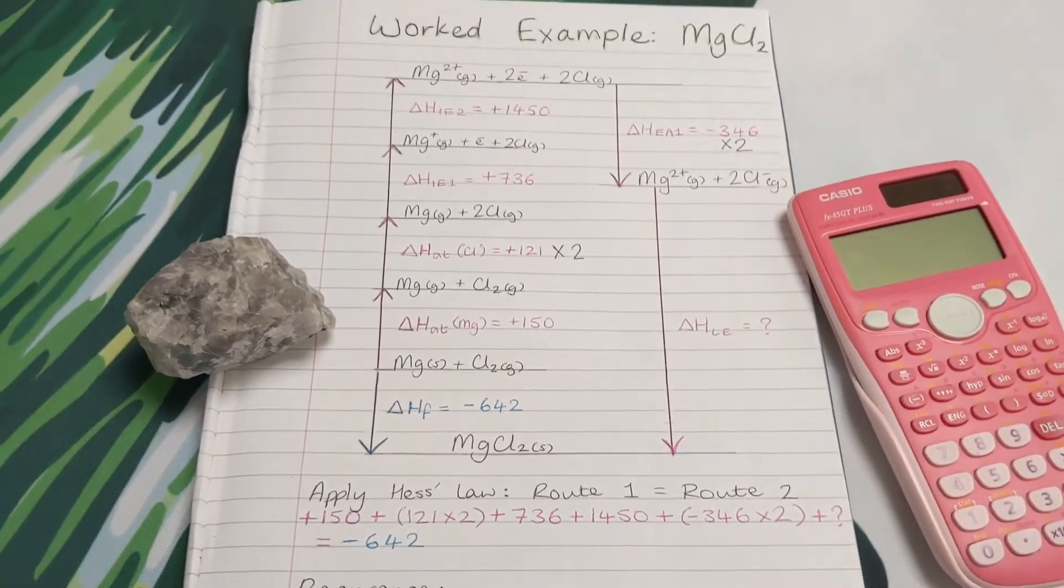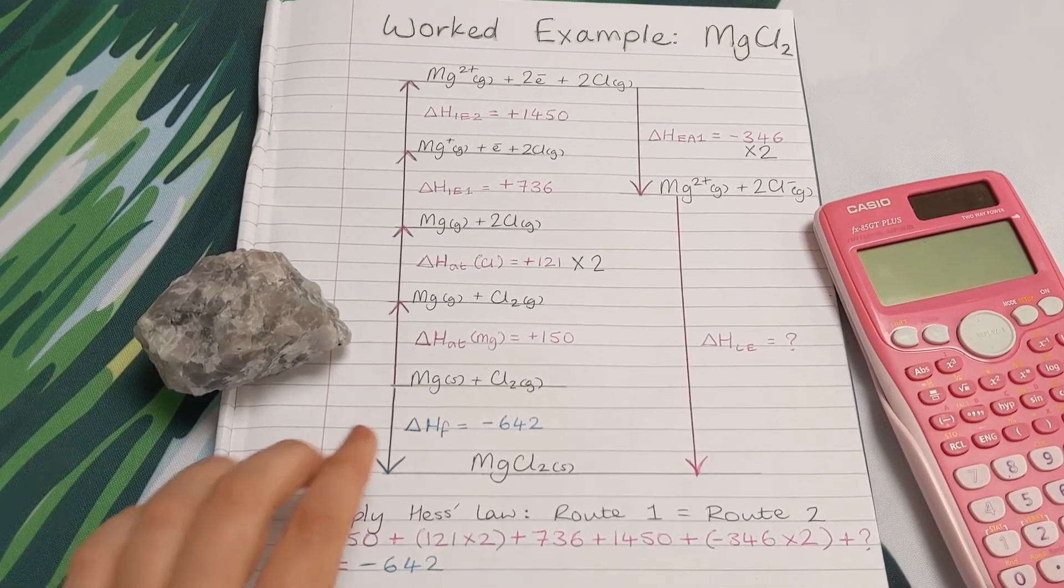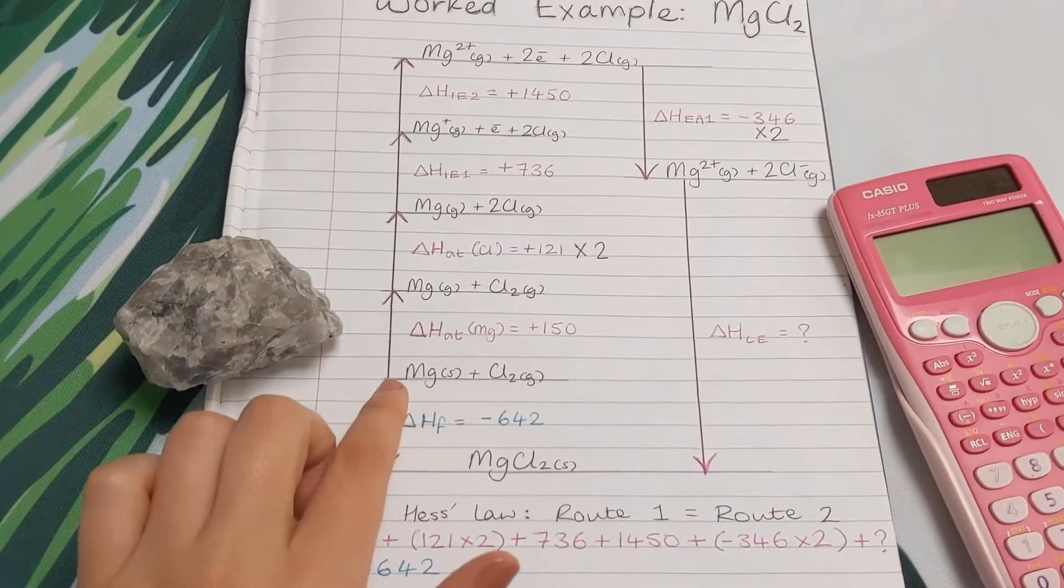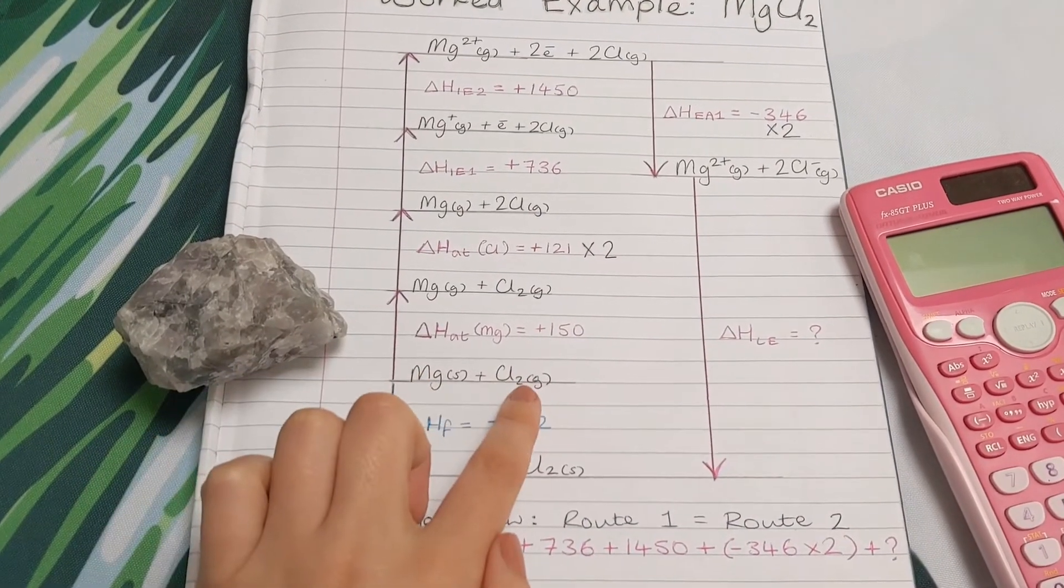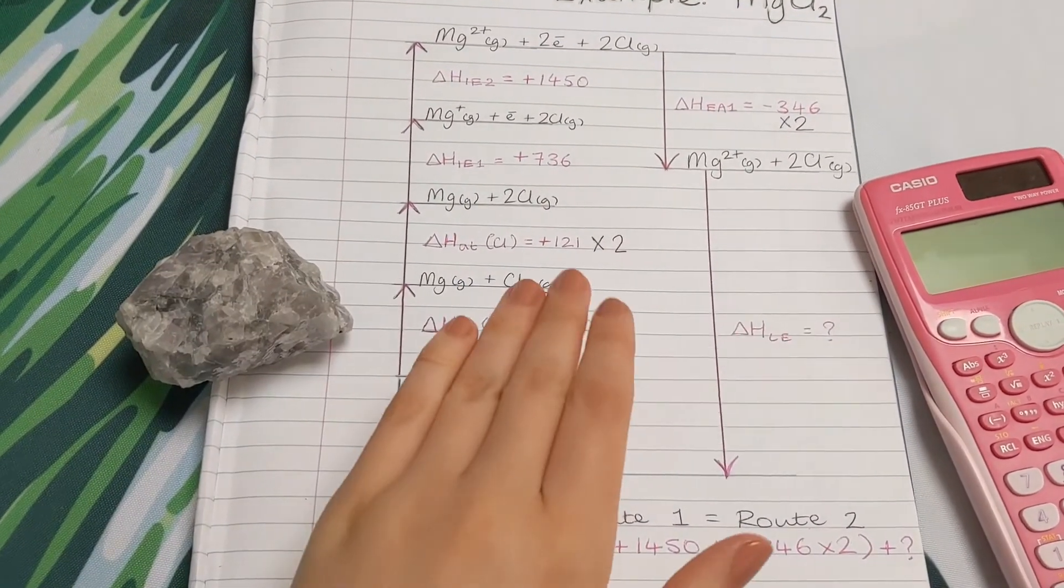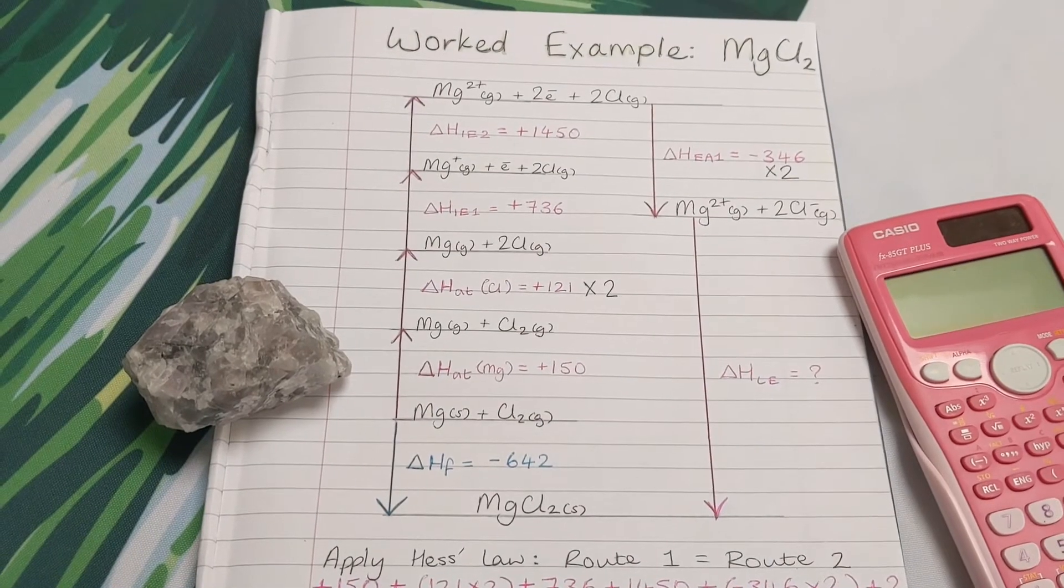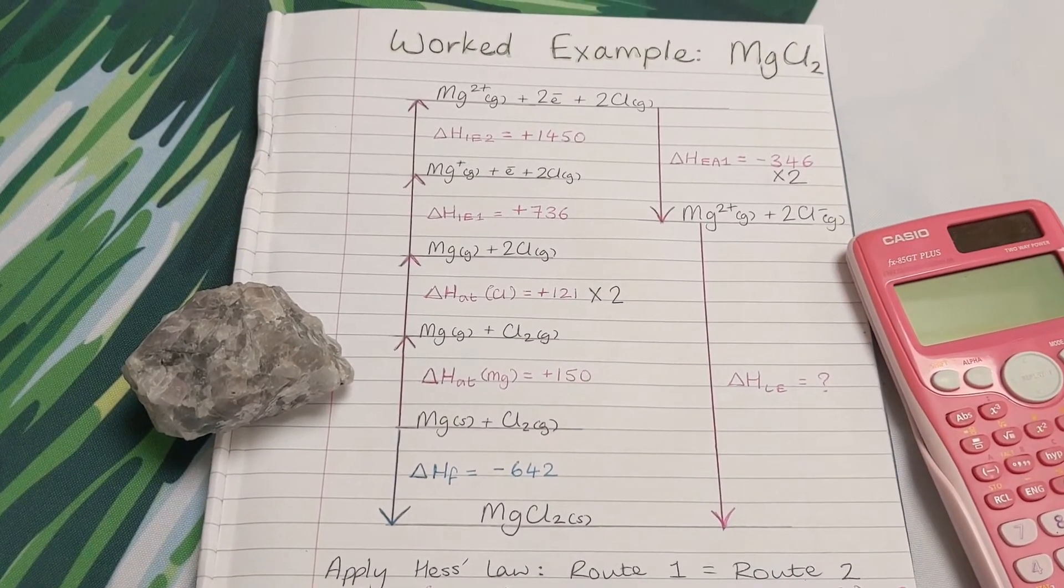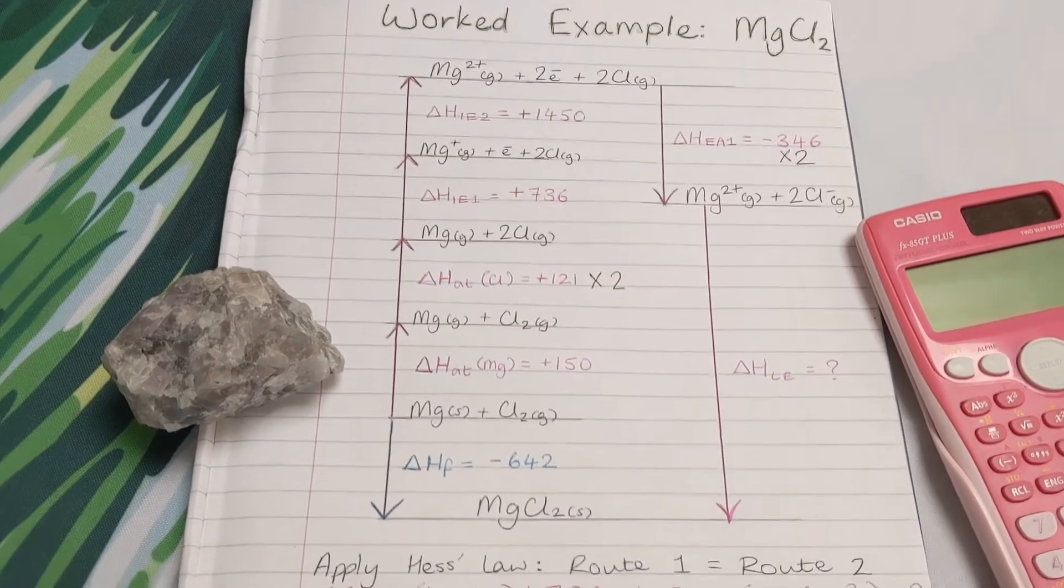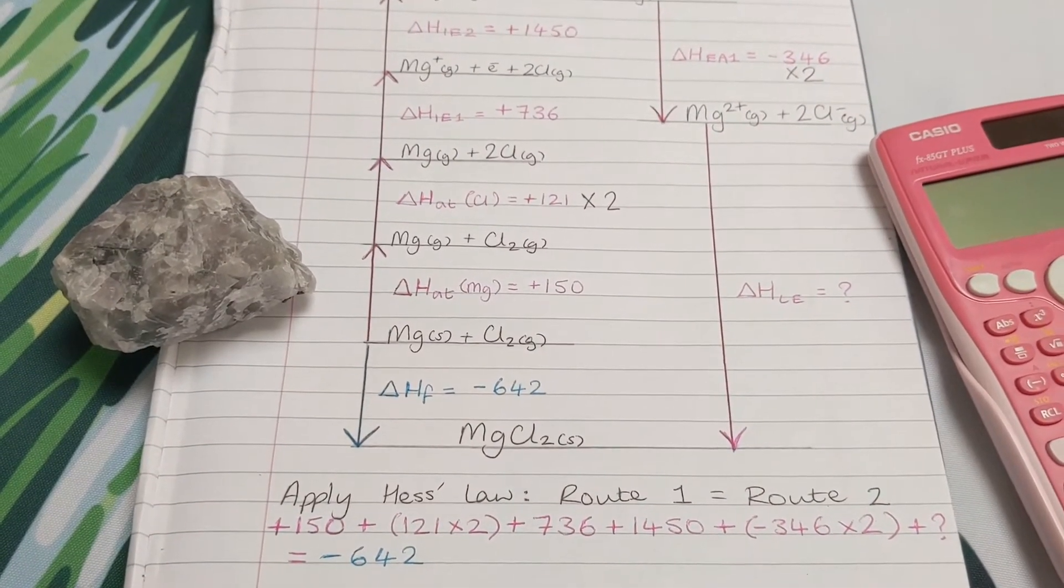Alright, so it's the same process again. We draw our cycle, we have all the steps, we include our equations with state symbols, pop our numbers in that we're given in the question or that we get from a data book or textbook, and we apply Hess's law.